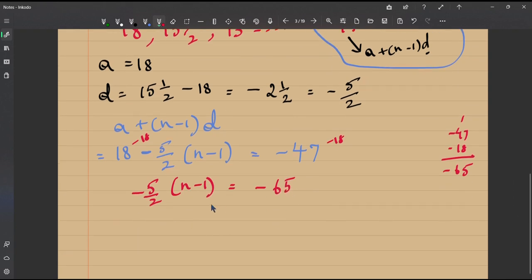So what is our n minus 1? Let us just multiply both sides by minus 2 by 5. What is minus 65 into minus 2 by 5? First of all the sign becomes positive, because negative into negative becomes positive, so 65 into 2 by 5. This can be divided by 5, both the numerator and the denominator can be divided by 5, you get 5 and 5. 5, 3 is 15, so this is 26.